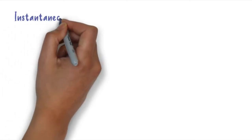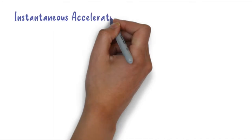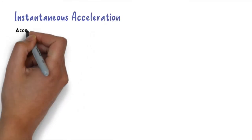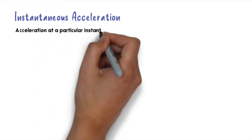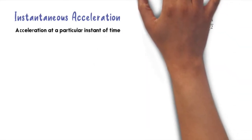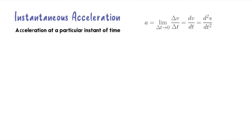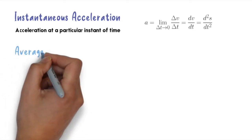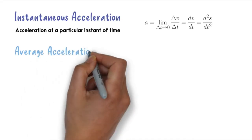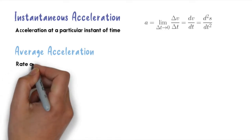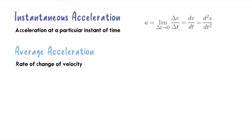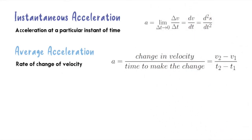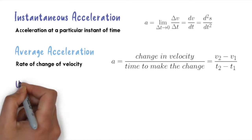Next we move to acceleration. Instantaneous acceleration refers to acceleration at a particular time. There are a few equations we can use to calculate instantaneous acceleration: the first one is the first derivative of velocity in terms of time, and the second one is the second derivative of displacement in terms of time. Next is average acceleration — it is the rate of change of velocity, expressed as v2 minus v1 divided by t2 minus t1, that is the time to make the change.